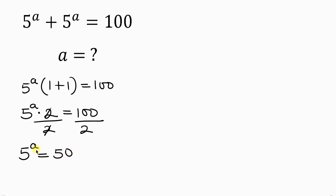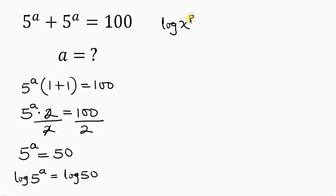Since the exponent is unknown, our next step is to take the log of both sides. So the log of 5 to the power of a equals the log of 50. Now let's apply the law of logarithm on the left hand side: log of x to the power of p can be expressed as p times log x. Applying this, the expression becomes a times log 5, equal to log 50.